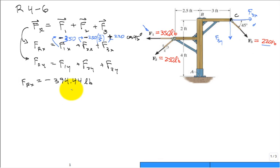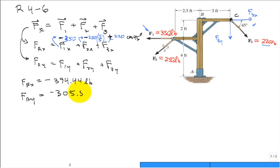Adding those up, the resultant in x comes to negative 394.44 pounds. Keep at least five significant digits — store it in your calculator because you'll need it in another step. Doing the same thing in y, FR in y comes to negative 305.56 pounds.